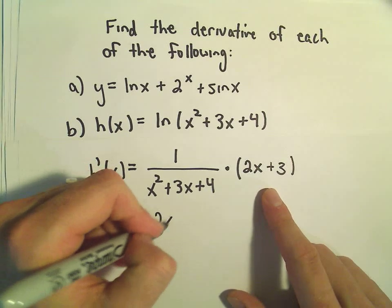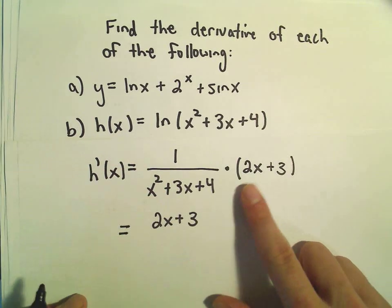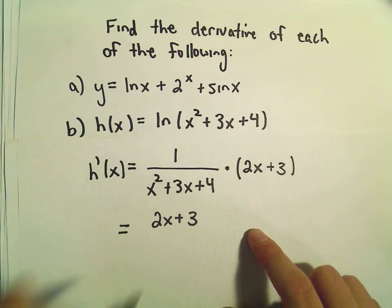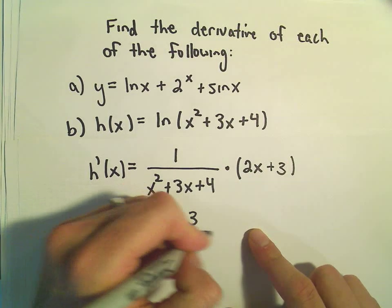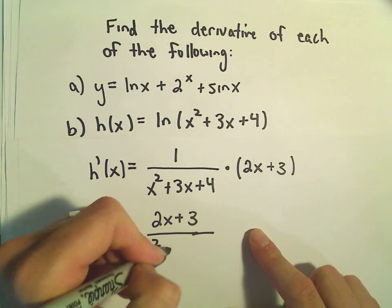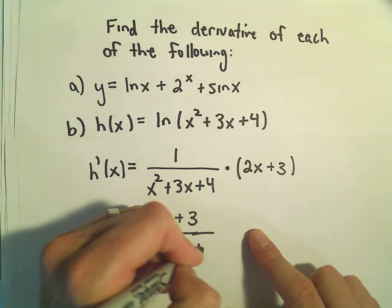And if we want to, as is often the case, we'll just stick the part that we're multiplying by in the numerator. So 2x plus 3 on top, over x squared plus 3x plus 4.